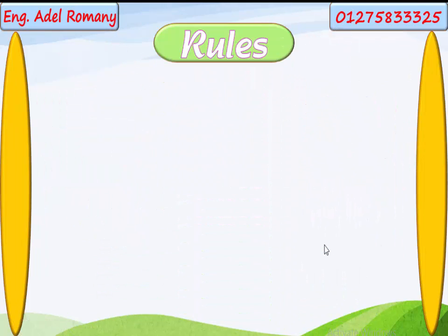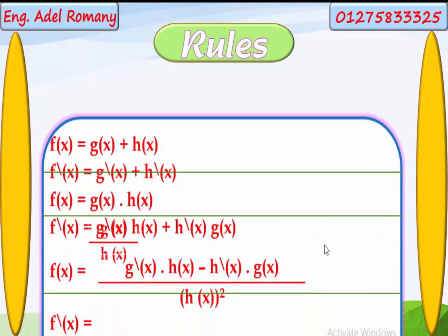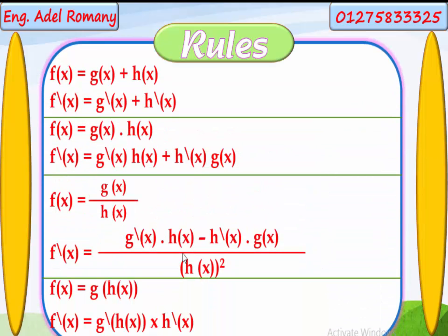We have many rules. Rule 1: if f of x equals g of x plus h of x, then f dash of x equals g dash of x plus h dash of x. This is the sum rule.